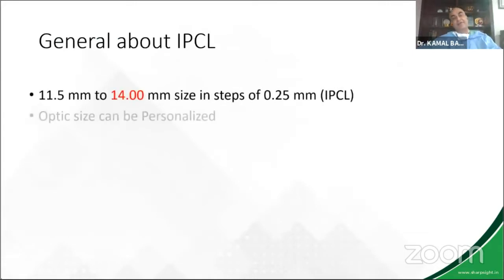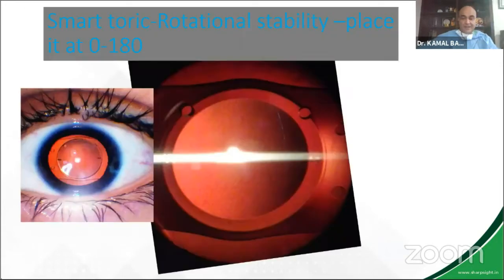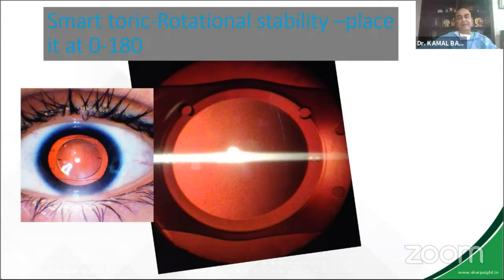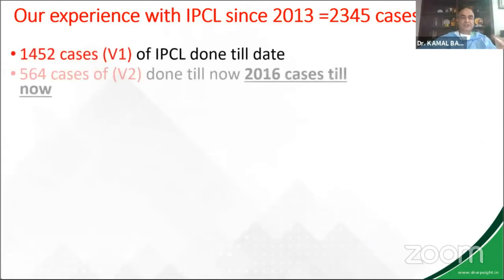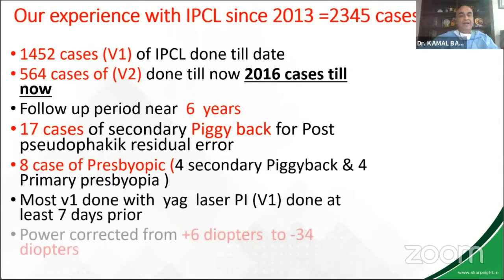Generally you can have sizes between 11.5 to 14 millimeters. When working up a phakic toric patient, you need very accurate, precise keratometry and astigmatic power measurement. Luckily with IPCL you have a customized lens which just needs to be placed at 0–180 degrees. We've done more than 2,200 cases till now and this is a brief summary of all the cases.